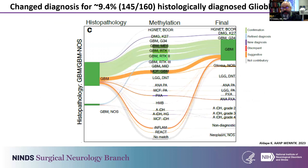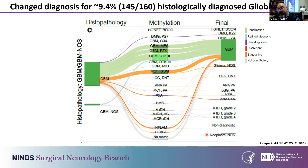Another thing I've come to appreciate is that we get many cases where the leading diagnosis is glioblastoma — it has the histological features we've known for years. But about 10% of these resolve into tumors with better clinical outcome, including low-grade gliomas, high-grade astrocytoma with piloid features, or IDH gliomas with non-canonical mutations. So we're able to identify things that used to be called glioblastoma but have better outcomes for patients.